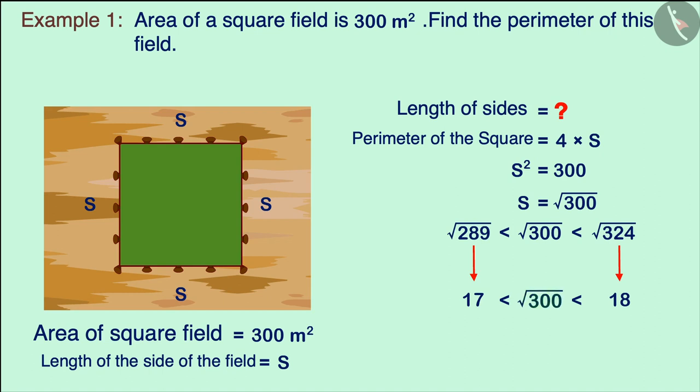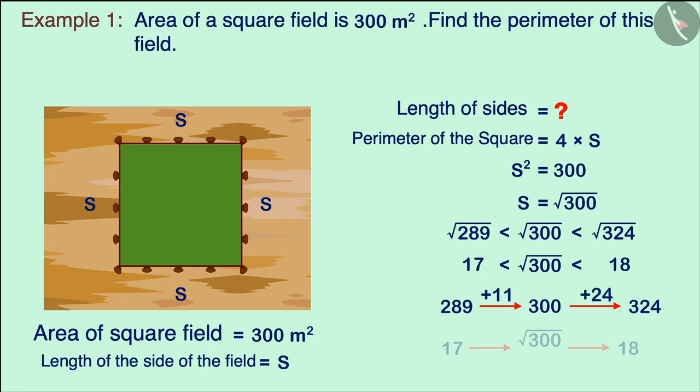This means that the square root of 300 will be between 17 and 18. We observe here that the number 300 compared to the number 324 is closer to the number 289, which we can verify by their difference. That is, the closest number to the square root of 300 is 17.